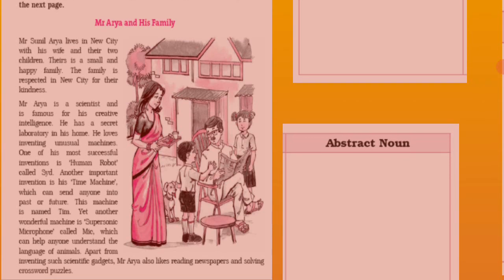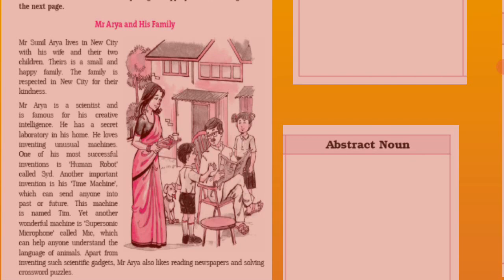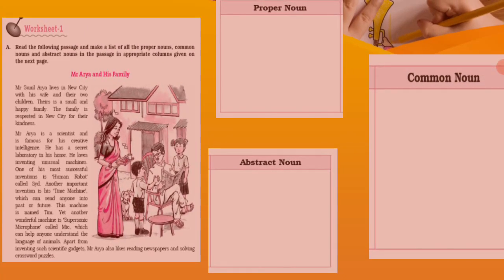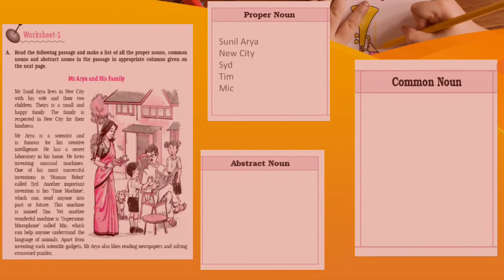For example, Mr. Sunil Arya — it's a name of a person. In proper nouns I have found: Sunil Arya; New City, which is the name of the city or place where they live; Sid, the name of the human robot that Mr. Arya invented; Tim, the name of the time machine he made; and Mick, the name of the supersonic microphone that Mr. Arya the scientist made. These are some proper nouns.